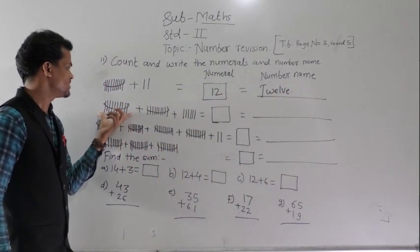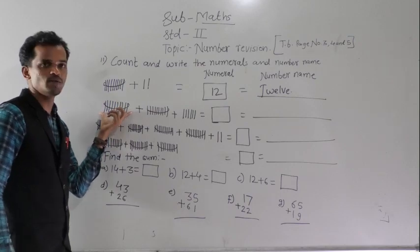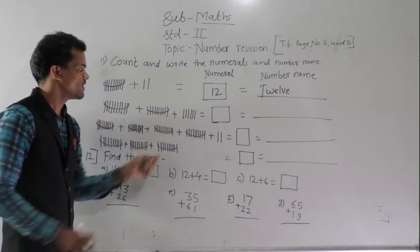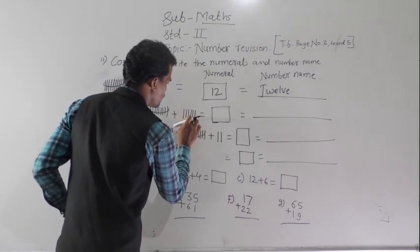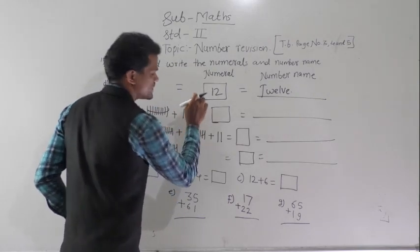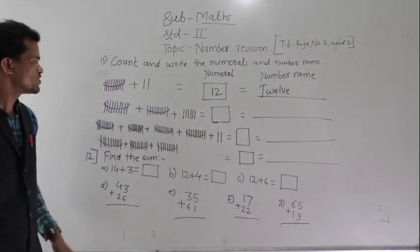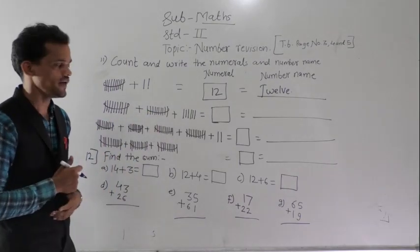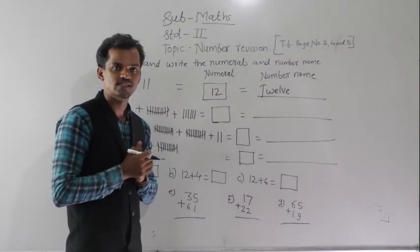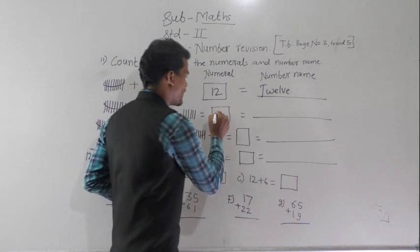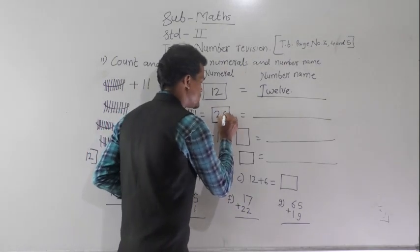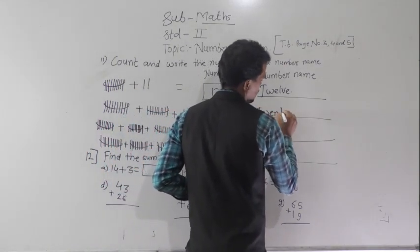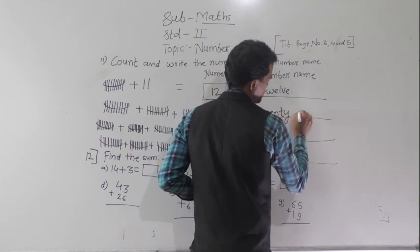Then there are two bunches of pencils and 6 single pencils. So 10 plus 10 equals 20, and 20 plus 6 equals 26. Write 26 here and write the spelling: T-W-E-N-T-Y S-I-X.